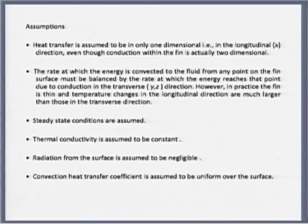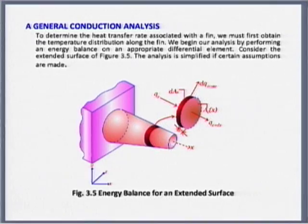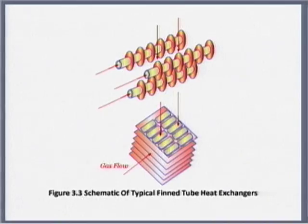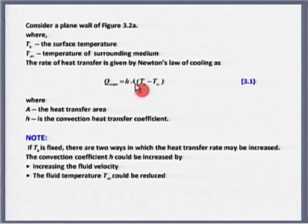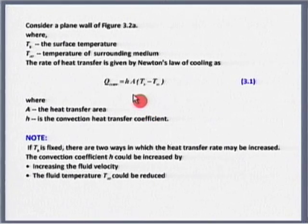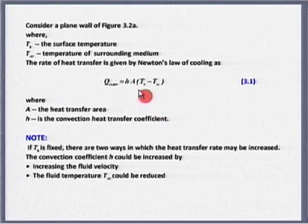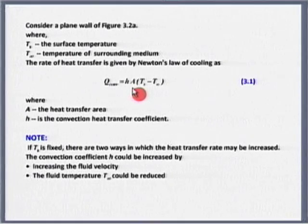We will get started where Professor Arun left us. To take a recap: we realize that we need to put fins — there is no other option. There are three ways of increasing the heat transfer rate, as is obvious from the equation. Either we can increase H, which involves improving the pumping power, or decrease T infinity, which also involves pumping power. The only harmless way of increasing the heat transfer rate is increasing the area, which is essentially what we are doing by putting fins.